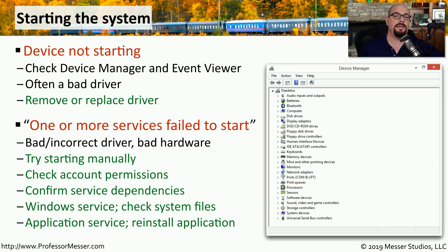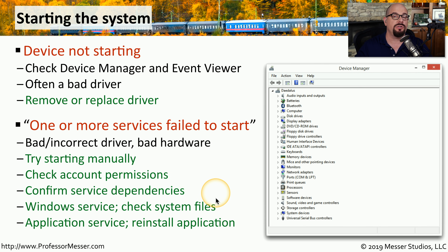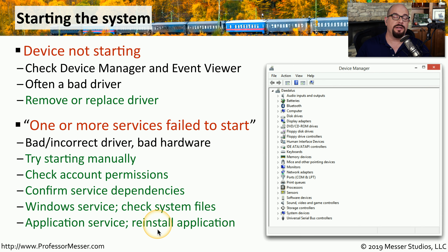When you start your operating system, many processes run in the background — in Windows these are called services. If any of those processes have a problem during startup, you'll see a message saying one or more services failed to start. From the Windows Services utility, you can try starting the service manually, check what permissions are being used, and verify that the username and password used by the service haven't been changed or deleted. You can also check service dependencies, as certain services must start first. If it's a Windows service, verify the executable is still on the system. If it's installed by an application, you may need to uninstall and reinstall the application to restore all proper service files.